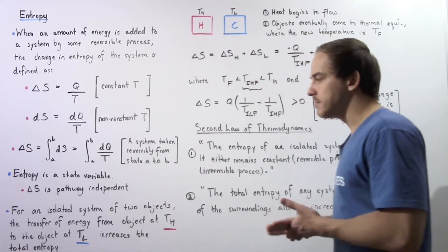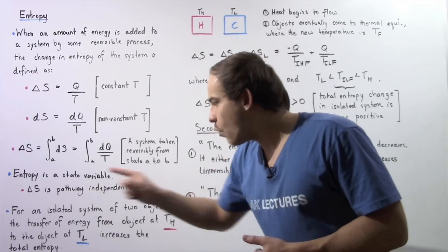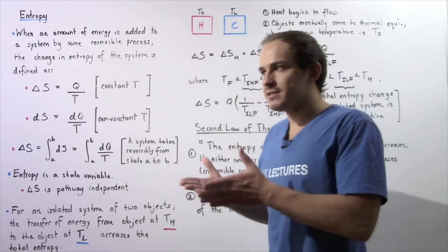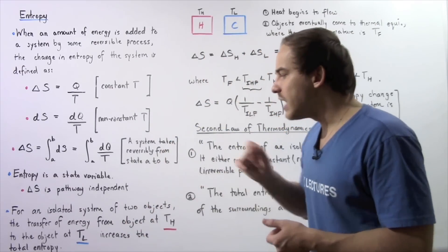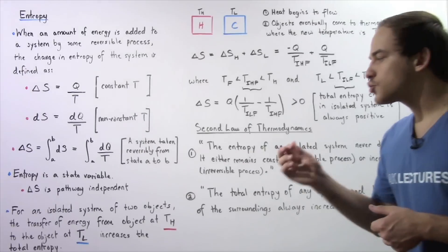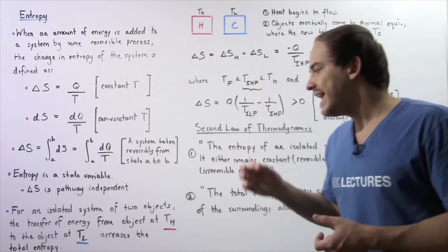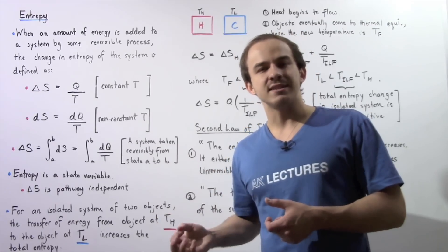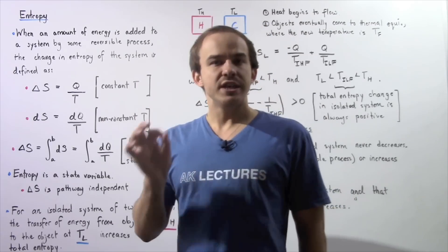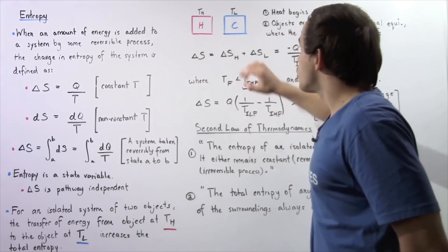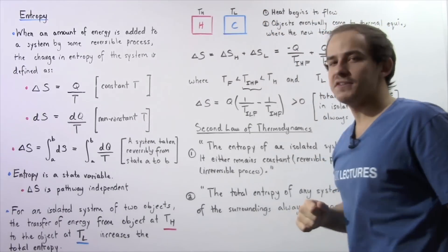Now, let's look at the following statement and then see why it is true. For an isolated system — a system in which mass and energy do not flow in or out — the transfer of energy from the object at higher temperature TH to the object at lower temperature TL increases the total entropy of that isolated system. Let's suppose we have two objects as our isolated system: an object H at a higher temperature TH and an object that is cooler at a lower temperature TL.